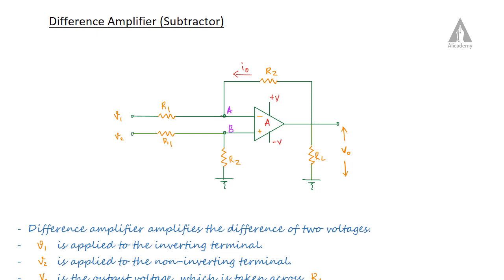Now suppose this node is represented as A and this node is represented as B. We are representing the voltage at these nodes as Vn. The current flowing through this branch is considered as I1. We are also having I2 and I0.